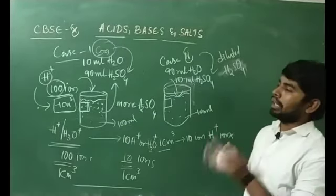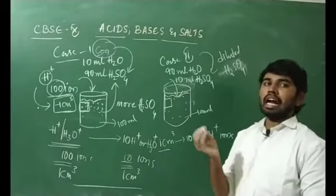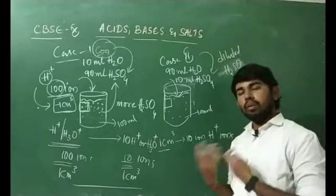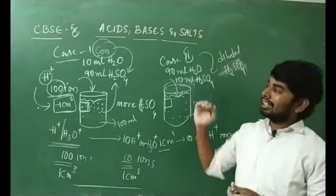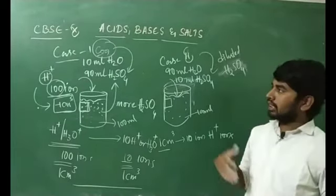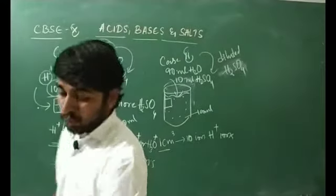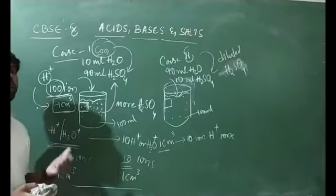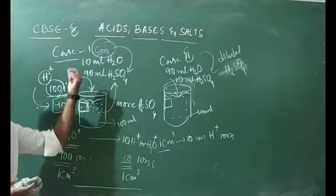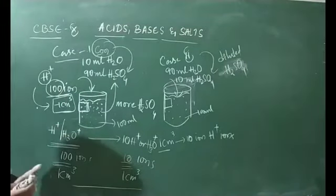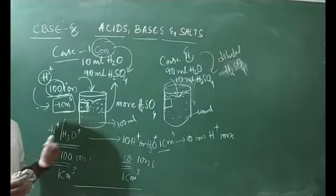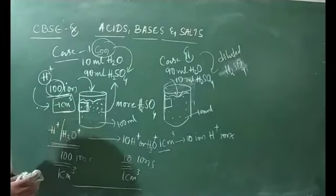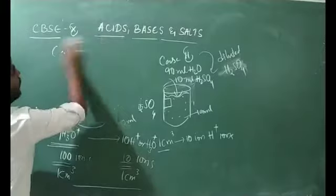Similarly, for bases: if you take a small amount of a base substance and add a large amount of water to dissolve it, the number of hydroxyl ions — OH⁻ ions — will decrease per unit volume. This is about the dilution of acids and bases. When the number of OH⁻ ions decreases per unit volume, the base is said to be a diluted base.